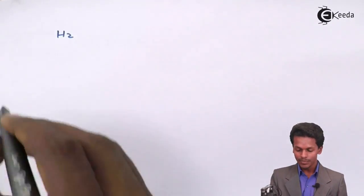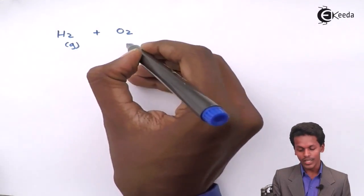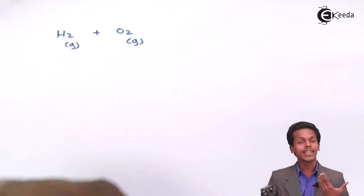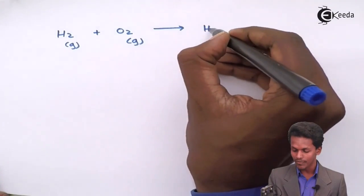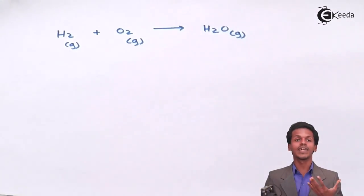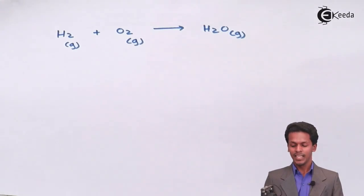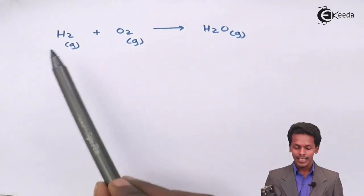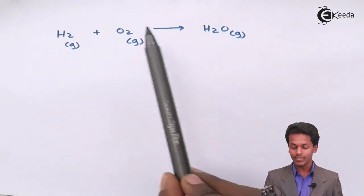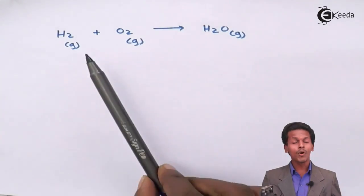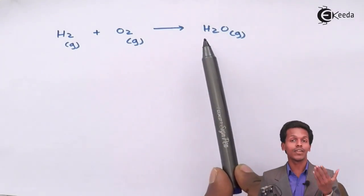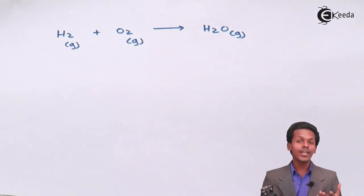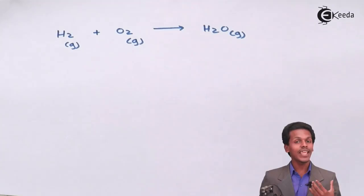Hydrogen in gaseous form reacts with oxygen, also in gaseous form, to produce water vapor — because the reaction is taking place in a closed chamber. Let us check whether the atoms are balanced. For hydrogen atoms, the left-hand side and the right-hand side are balanced. However, for oxygen atoms, there are two atoms on the left-hand side but only one atom on the right-hand side, so it is not balanced.